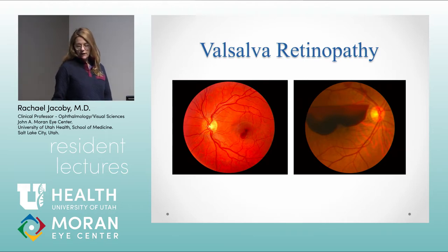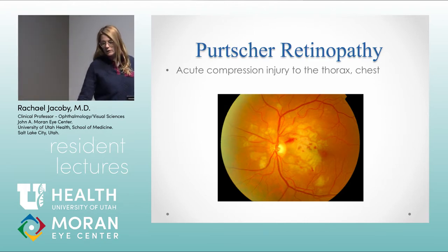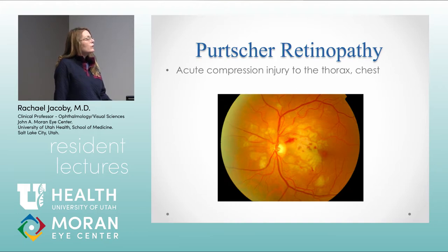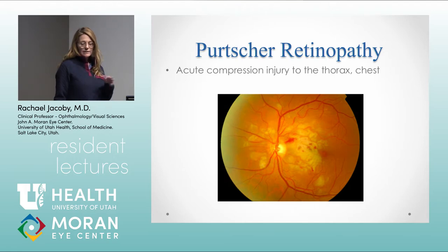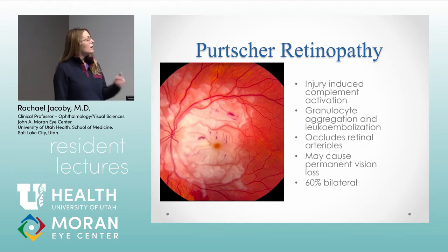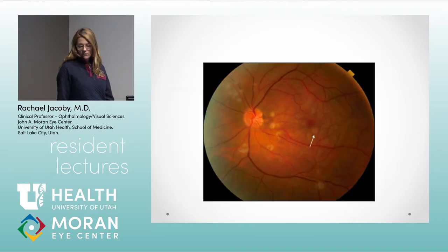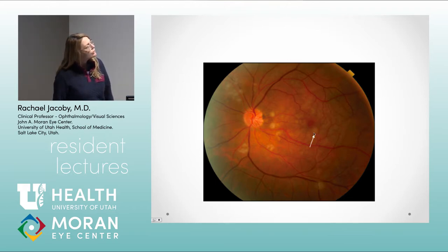Purtscher's retinopathy is due to an acute compression injury to the thorax or chest — initially described in someone who fell out of a tree. It's thought to activate the complement cascade, leading to leukocyte aggregation and occlusion of arterioles that cause ischemia. Patients can also have optic nerve edema leading to optic nerve atrophy and irreversible vision loss, though sometimes it does improve. The Purtscher flecken are this polygonal shape where the whitening doesn't actually reach the vessels — there's a clear area between the whitening and the vessel, from occlusion of pre-capillary arterioles.